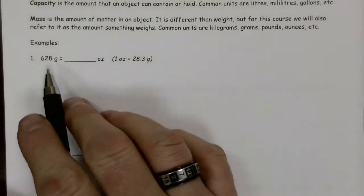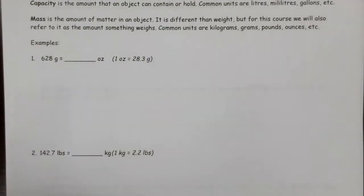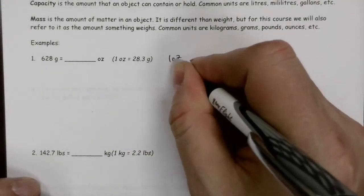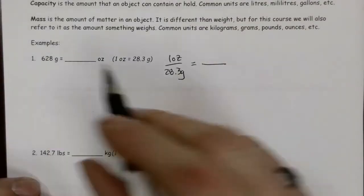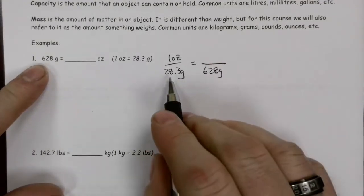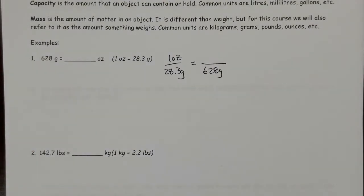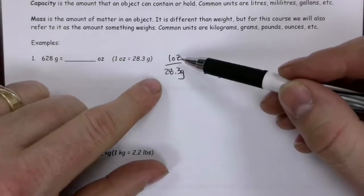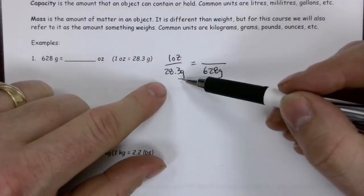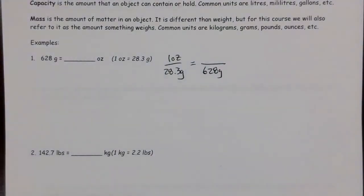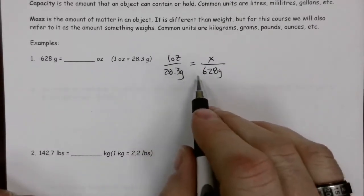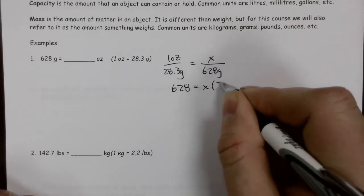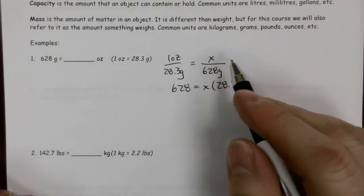We're going to convert 628 grams into ounces. We're given the conversion that one ounce is the same as 28.3 grams. To set up our proportion, we need to put the grams in the right spot, in the denominator because that's where it was on the left-hand side of the proportion. I could have had this flipped with 28.3 grams in the numerator and one ounce in the denominator. I would have just put the 628 grams in the numerator then. As long as I'm consistent, it doesn't really matter how I set that up. We've got x ounces here. We're going to cross multiply. One ounce times 628 is 628. And then this will be x times 28.3. I already know my answer is going to be in ounces.